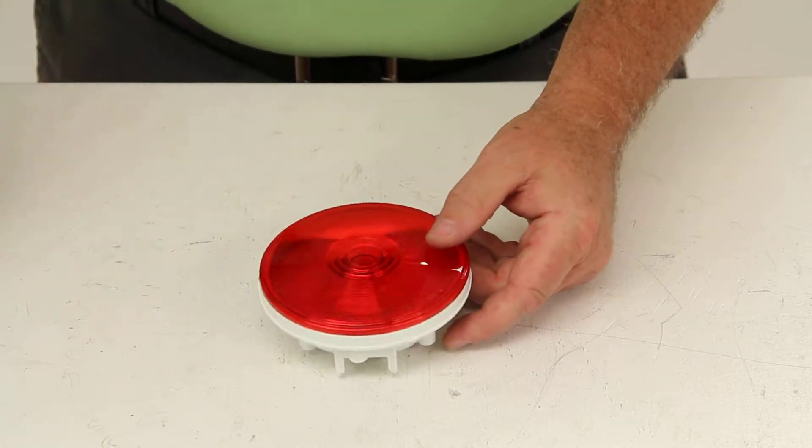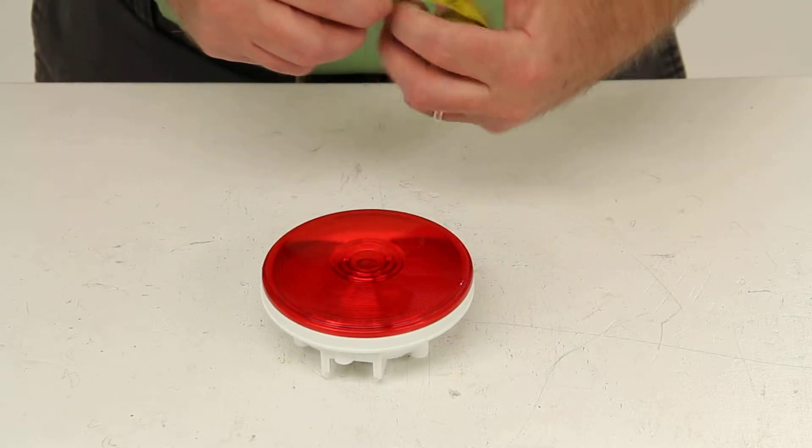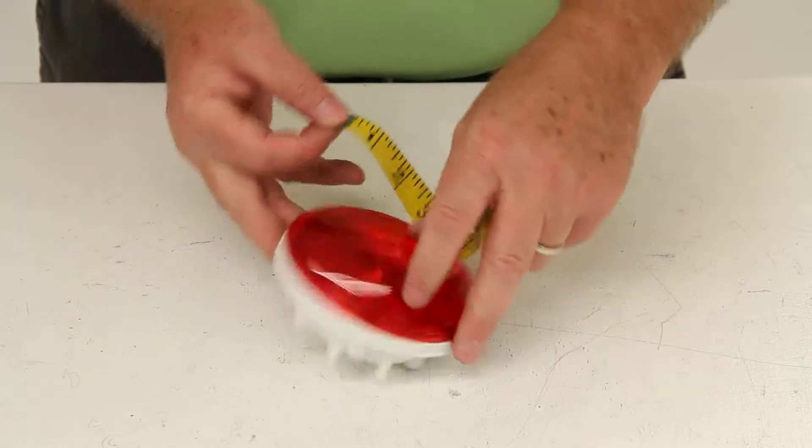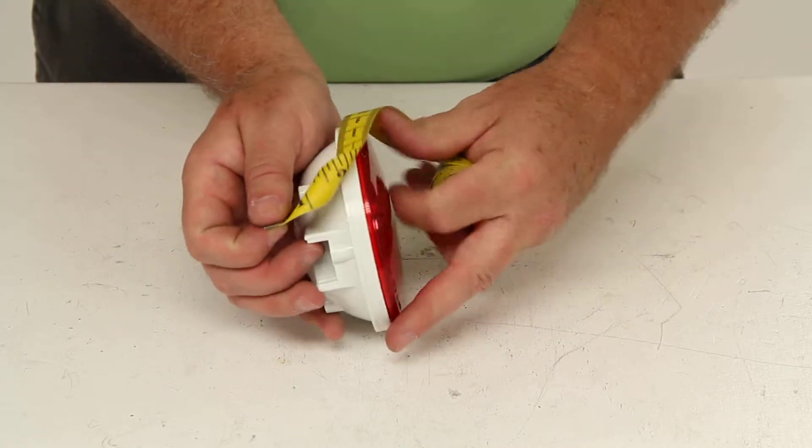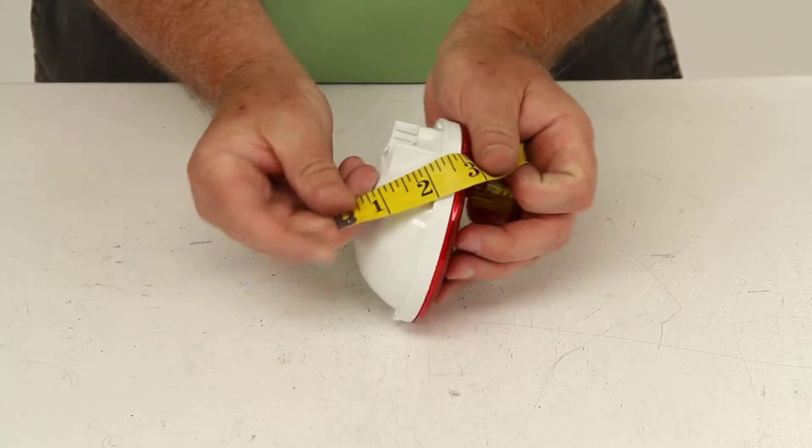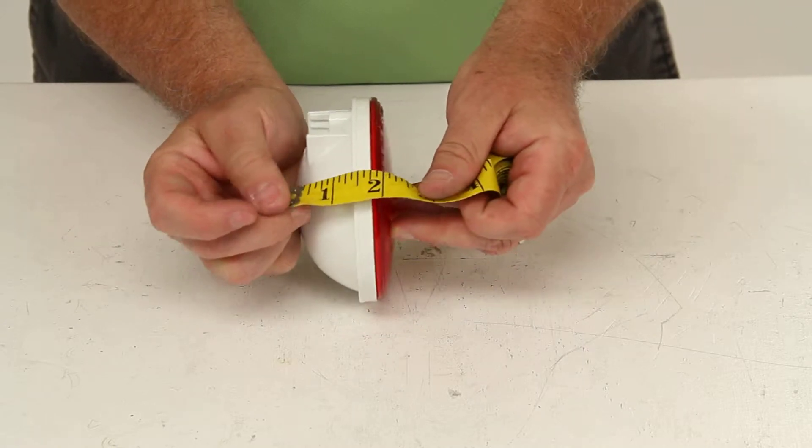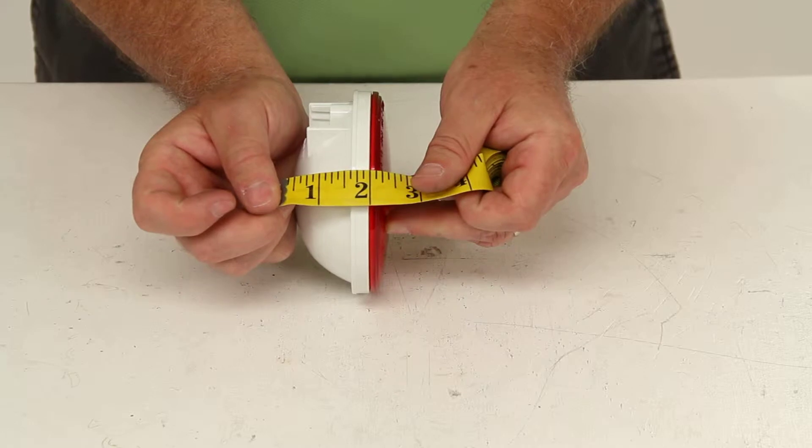This red light will measure four and a quarter inches in diameter. And the overall depth, because it's rounded, it's hard to measure, but it will give you an overall depth of two and one-sixteenth.